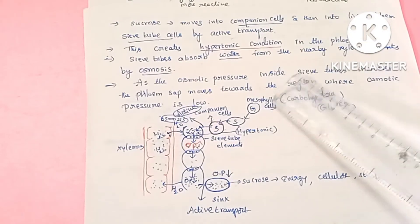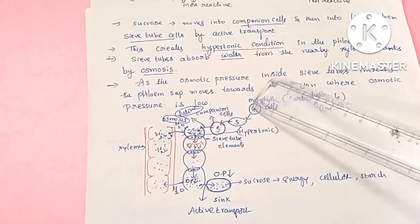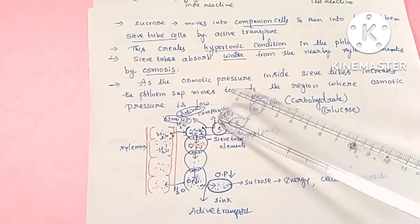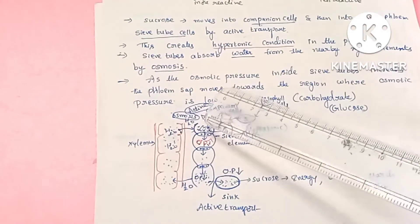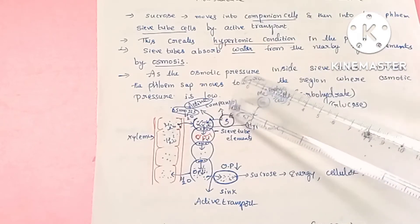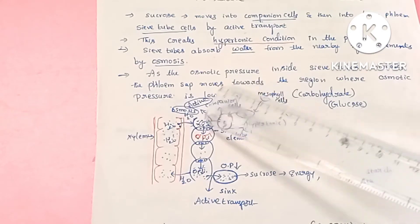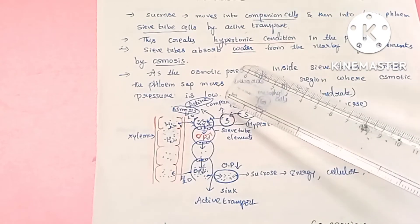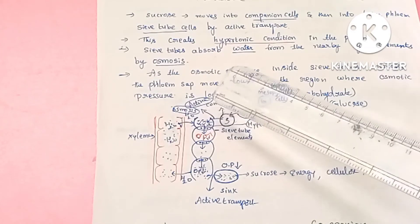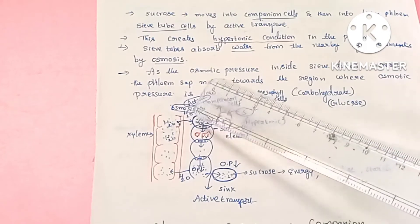In the mesophyll cells, glucose is generated and then converted into sucrose. After the mesophyll cells, sucrose moves into the companion cells. The companion cells are living cells adjacent to the sieve tube elements. The sucrose is loaded into the sieve tube elements — this loading process is an active transport process that requires energy.